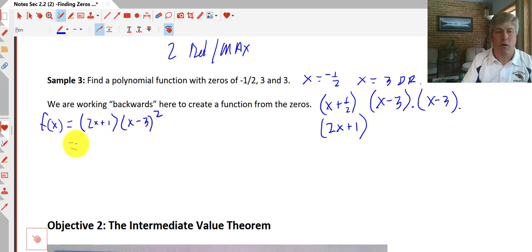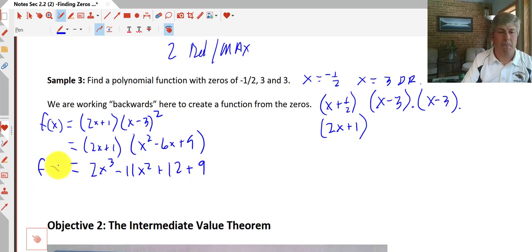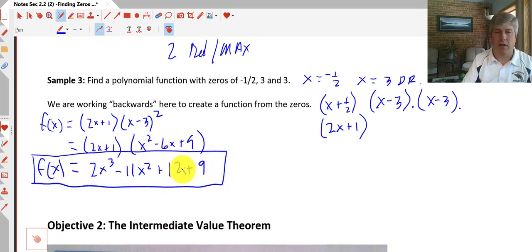So we can foil all this together and we get 2x plus one and we know our pattern. So that's x squared minus 6x plus nine. We'll have to do a little more foiling there which I did in advance and that comes out to 2x cubed minus 11x squared plus 12x plus nine. So our function, our final answer.